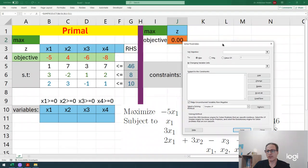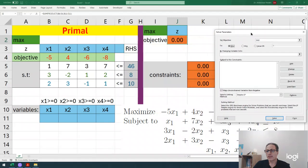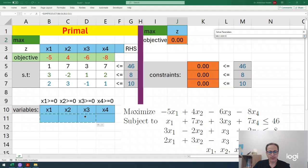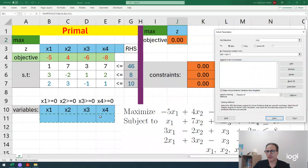What is my objective? My objective is maximizing this value in cell J2. Do I want to maximize, minimize, or just solve a system? I want to maximize. Where are your decision variables? I select these cells as decision variables. Done.